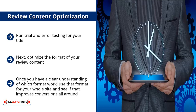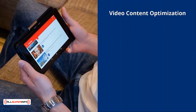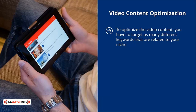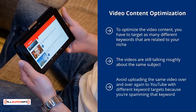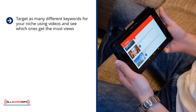Video content optimization: to optimize your video content, target as many different keywords related to your niche as possible. There are many software packages that enable you to create custom videos quickly and cheaply — you feed the software certain pieces of content and can switch elements like voiceovers, sound effects, and graphics. The videos still cover roughly the same subject but have enough changes for YouTube not to ban them. Avoid uploading the same video repeatedly to YouTube with different keyword targets, as you'd be spamming — your account might get banned and you won't make any money.